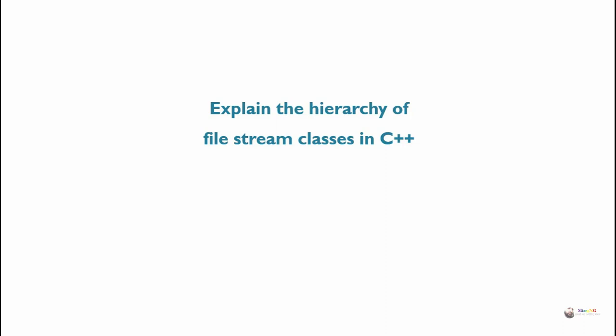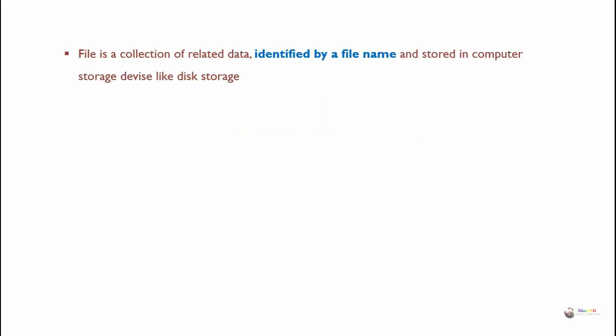Explain the hierarchy of FileStream classes in C++. A file is a collection of related data identified by a file name and stored in a computer storage device like disk storage. C++ programs can perform read and write operations on files.